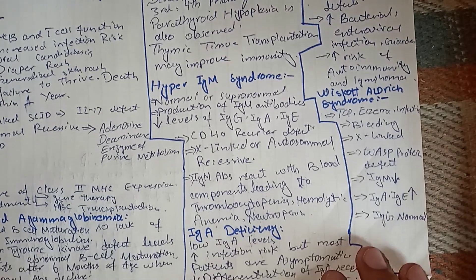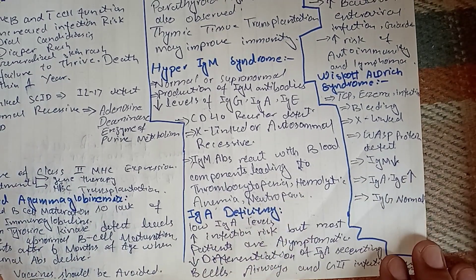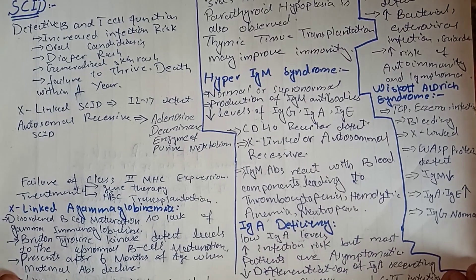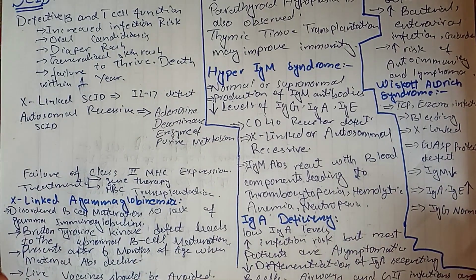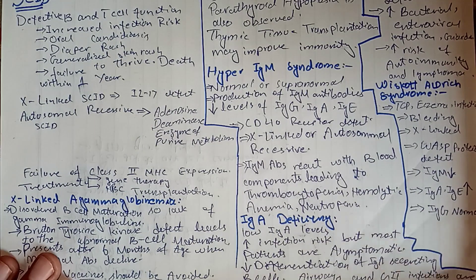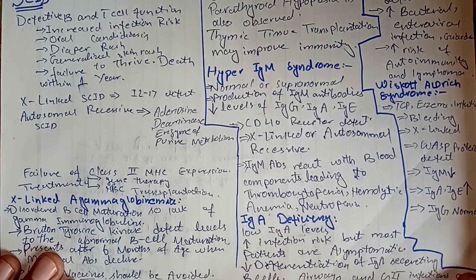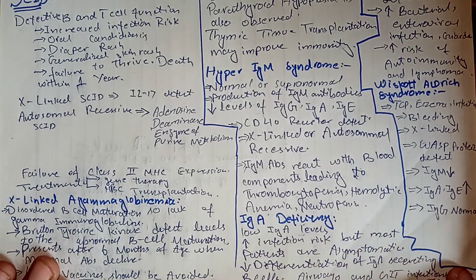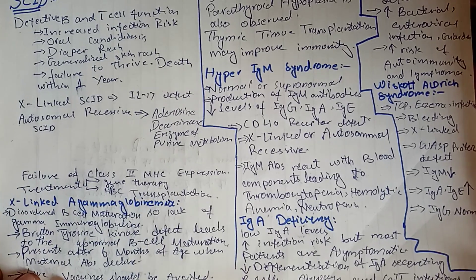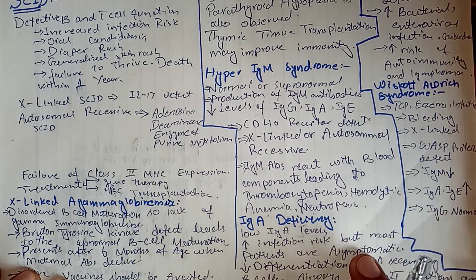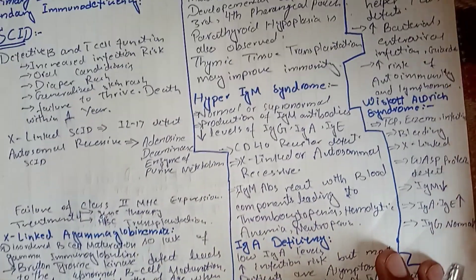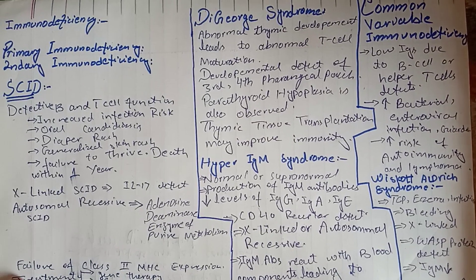In IgA deficiency, there is a low level of IgA antibodies while other antibodies may be normal. Patients may be asymptomatic because other antibodies function normally, but airway and GI tract infections are common since IgA normally prevents infection at those sites. In all immunodeficiency conditions, infection risk is increased.